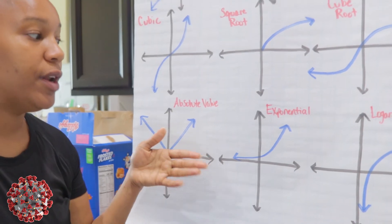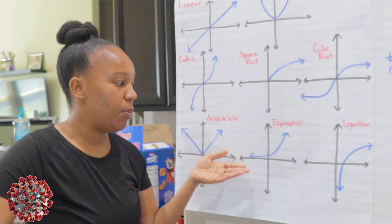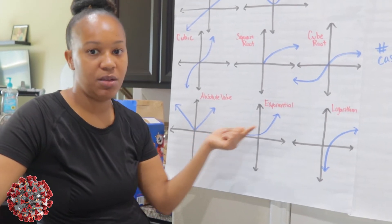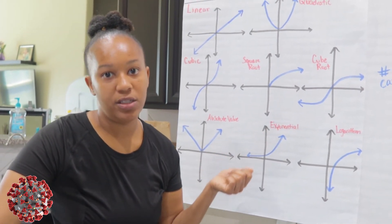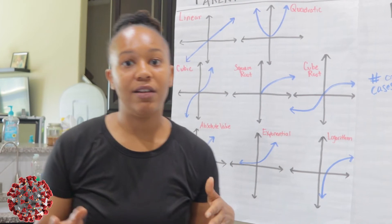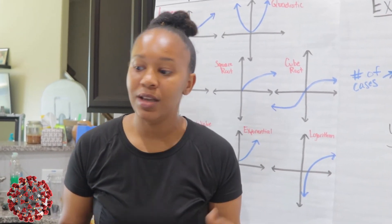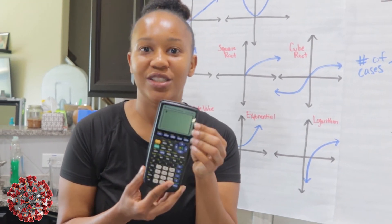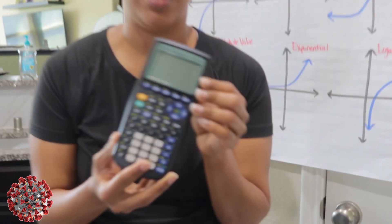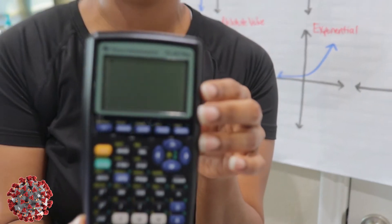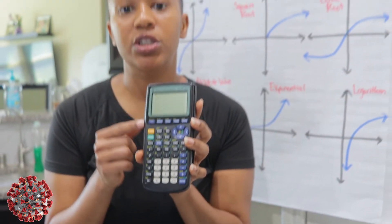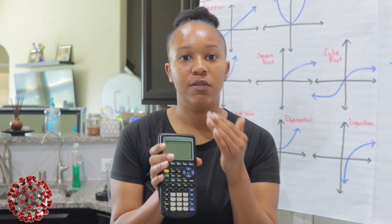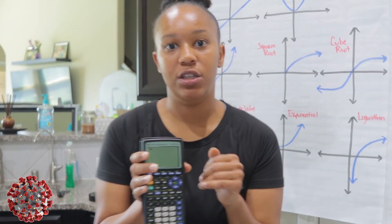And so what we want to do now, and this is what the whole point of algebra is, is we want to create an equation to estimate the growth of the number of cases in the USA. Now there are a lot of sophisticated technology that actually does this, but typically in a math classroom we use this piece of technology right here, which is a TI-83 calculator. Some people use the 84 as well. So I'm just going to show you how to create a basic model to represent the growth of the number of coronavirus cases in the USA.